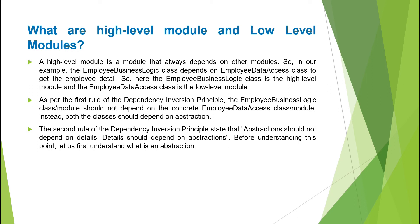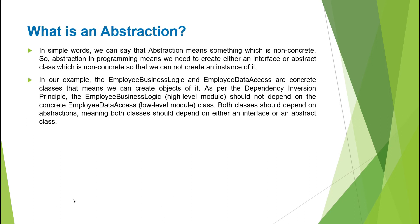The second rule of DIP states that abstraction should not depend on details; details should depend on abstractions. In simple words, abstraction means something non-concrete — in programming, we create either an interface or abstract class that is non-concrete so we cannot instantiate it. In our example, EmployeeBusinessLogic and EmployeeDataAccess are both concrete classes, meaning we can create objects of them. As per DIP, both should depend on either an interface or an abstract class instead.